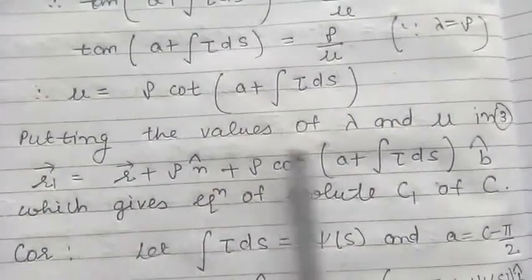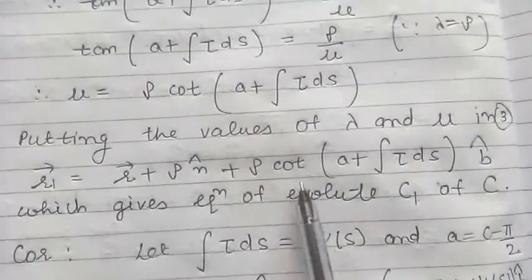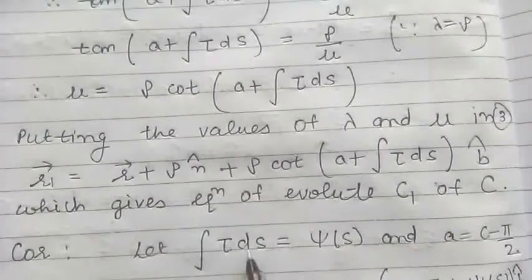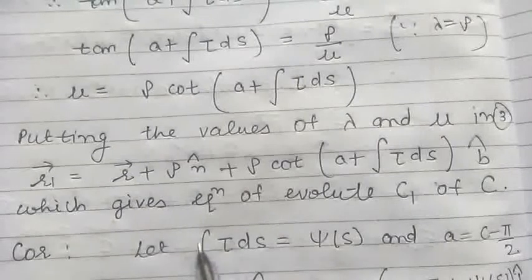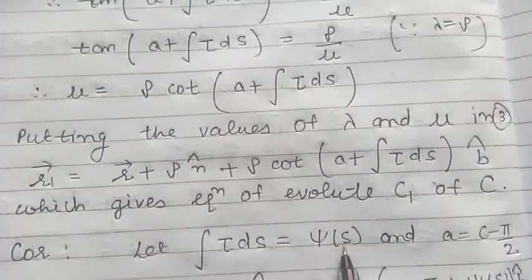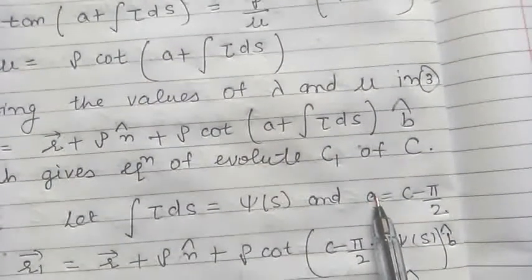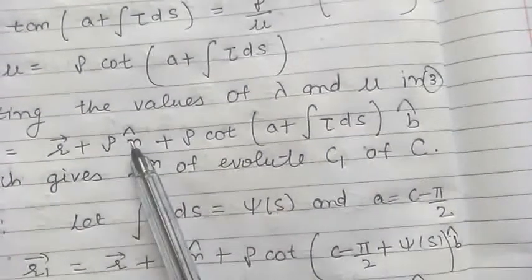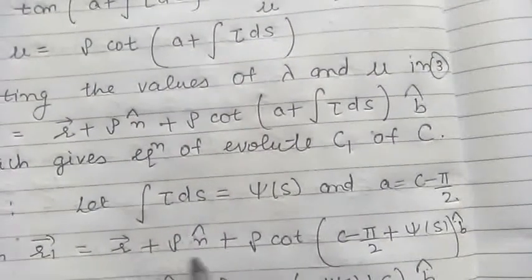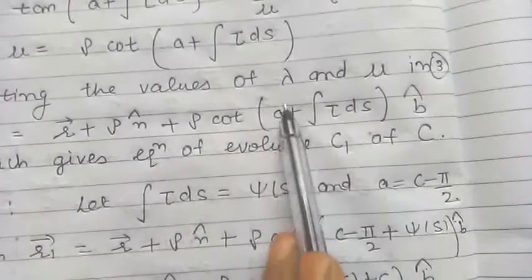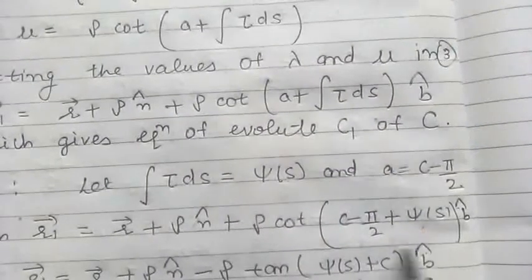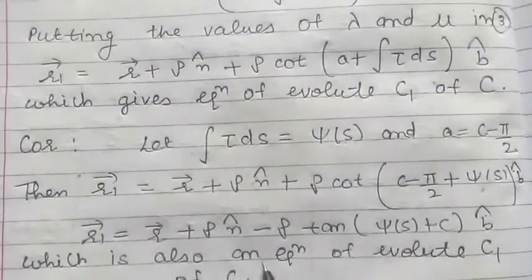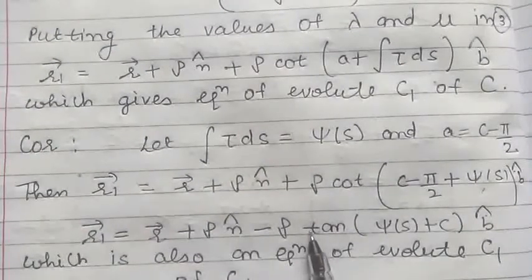We can also express the equation of evolute in another form in terms of the tangent. For this, we put ∫τ dS equal to χ(s), which represents some function of s. Since A is an arbitrary constant, we can take its value in particular as c minus π/2. Substituting these two values in the equation already obtained, we get vector R1 equal to vector R plus ρ N cap plus ρ cot(A plus ∫τ dS), where cot(90 minus θ) changes into tan θ. So we get another form of the equation of evolute C1, which is finally the equation of evolute C1 for the given curve C.